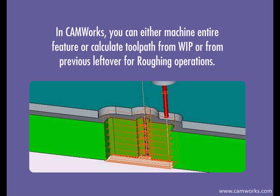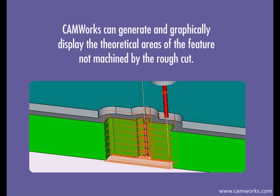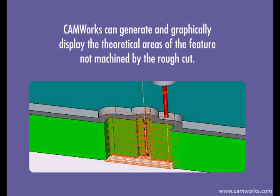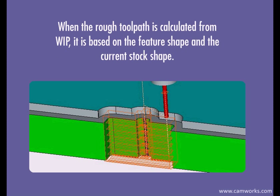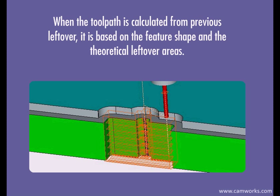In CAMWORKS, you can either machine an entire feature, calculate tool path from work and process, or from previous leftover or roughing operations. CAMWORKS can generate and graphically display the theoretical areas of a feature not machined by the rough cut. When the rough tool path is calculated from work and process, it is based on both the feature shape and the current stock shape. When the tool path is calculated from previous leftover, it is based on the feature shape and the theoretical leftover areas.